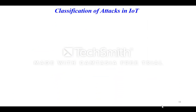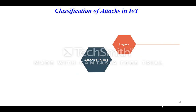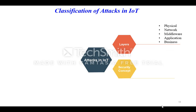Results and discussions. Classification of attacks in the IoT. Attacks based on layers: in this class, there are five layers — physical, network, middleware, application, and business layer.